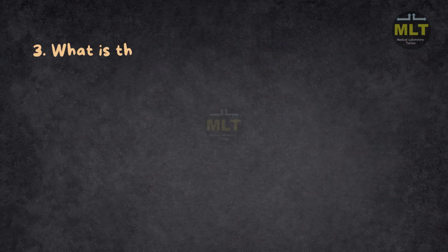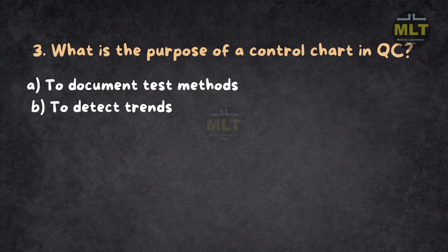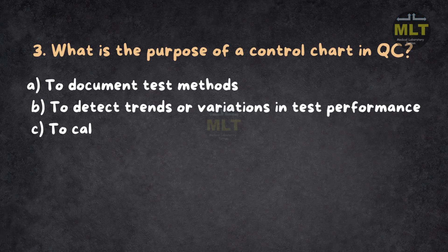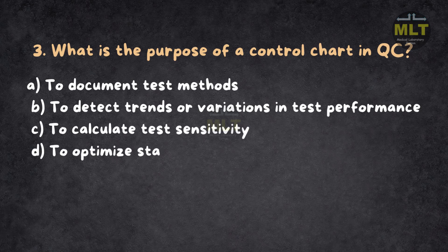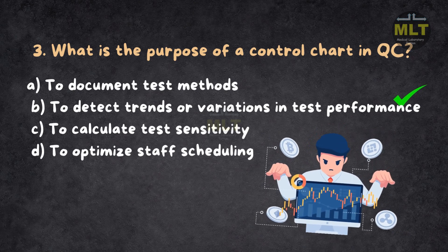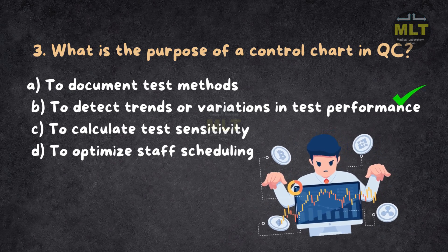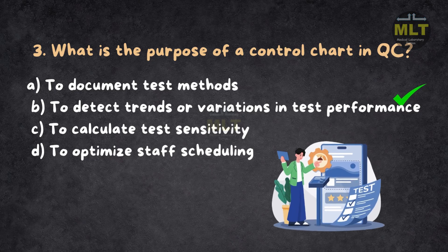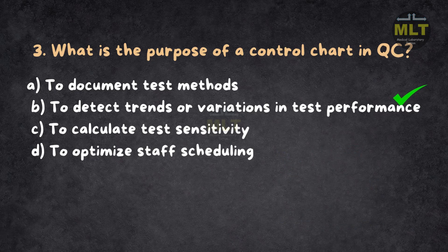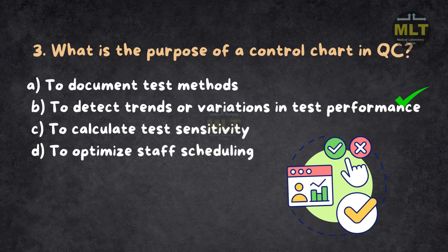Question 3: What is the purpose of a control chart in QC? a. To document test methods. b. To detect trends or variations in test performance. c. To calculate test sensitivity. d. To optimize staff scheduling. Correct answer: b. To detect trends or variations in test performance. Control charts graphically monitor test results over time, helping identify trends, shifts, or random errors. They ensure that testing remains within acceptable limits. Control charts are not for sensitivity calculations or staff management — their primary role is QC performance tracking.